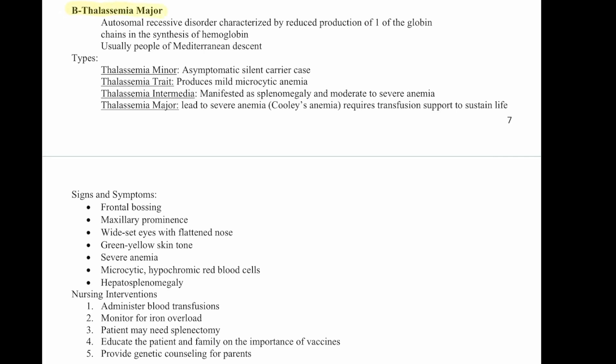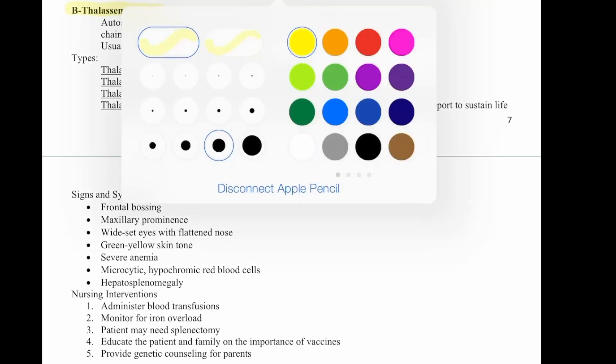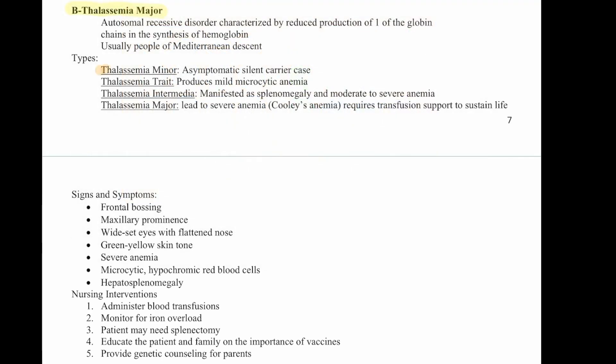Beta-thalassemia major is an autosomal recessive disorder characterized by reduced production of one of the globin chains in the synthesis of hemoglobin, usually in people of Mediterranean descent. There are several types: thalassemia minor is an asymptomatic silent carrier; thalassemia trait produces mild microcytic anemia; thalassemia intermedia is manifested as splenomegaly and moderate to severe anemia; and thalassemia major leads to severe anemia, called Cooley's anemia, and requires transfusions to sustain life.